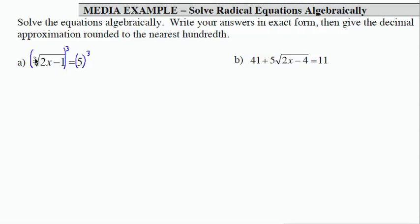So the cube root of a cube just gives what's under the radical. That's how we clear the radical. 2x minus 1, then, equals 5 cubed, which is 125.